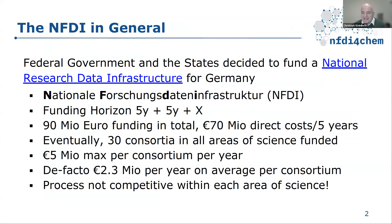It's not just chemistry — the decision was to fund 30 consortia across all areas of science, reached in three rounds of funding decisions. We have now had the second round, so 20 consortia have been decided already. The chemistry consortium, NFDI for Chem, is a large collection of institutions all across Germany dealing with research data infrastructure. We started our work precisely a year ago.